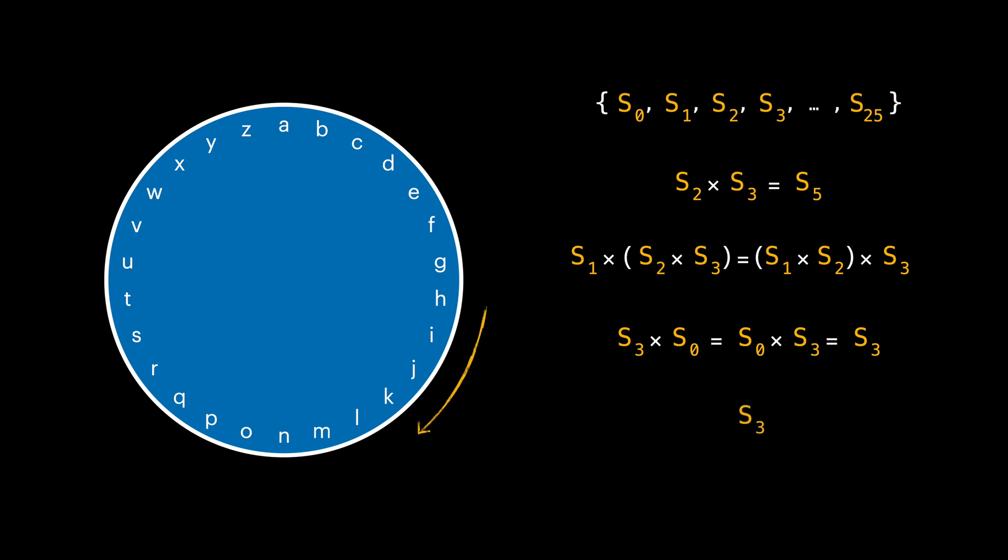We can easily see that each shift has also a unique inverse. For example, the inverse of shifting 3 is shifting 23. It neutralizes the effect of shifting 3, which is equal to identity shift.